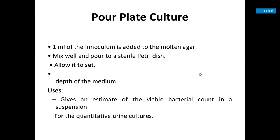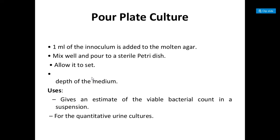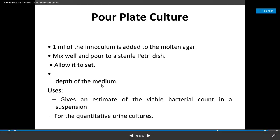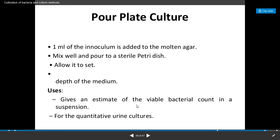The next very important method is the pour plate technique or pour plate culture. In this technique, 1 ml of the inoculum is added to molten agar. It is mixed well and then poured into a sterile petri plate or petri dish. It is allowed to set or become solidified. After solidification, the plate is kept in the incubator for 24 hours at 37°C. After incubation, growth of the bacterium takes place. Uses: it gives an estimate of the viable bacterial count in a suspension and is also useful for the quantitative culturing of urine samples.